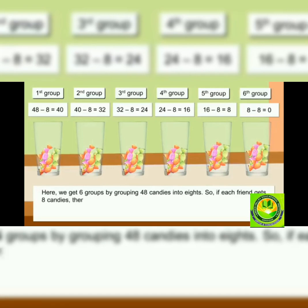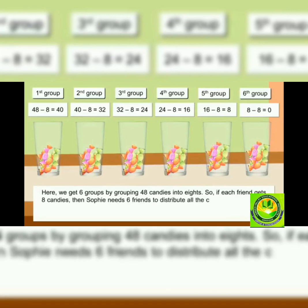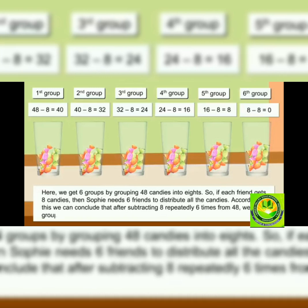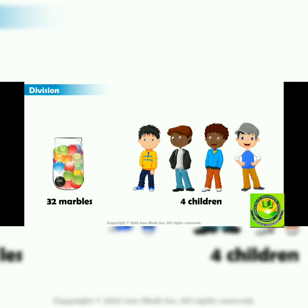Here we get six groups by grouping 48 candies into eight. So if each friend gets eight candies, then Sophie needs six friends to distribute all the candies. We can conclude that after subtracting eight repeatedly six times from 48, we get six groups of eight.